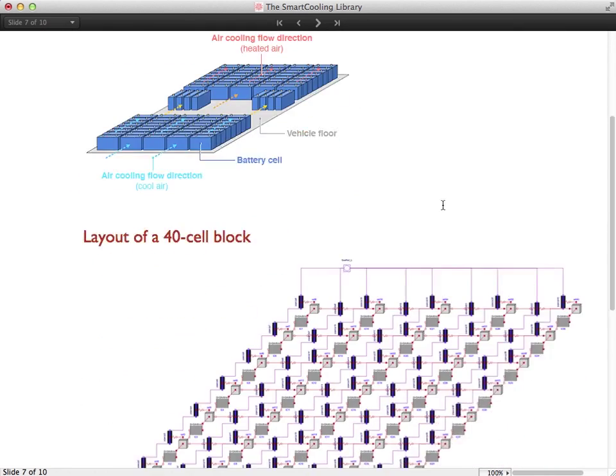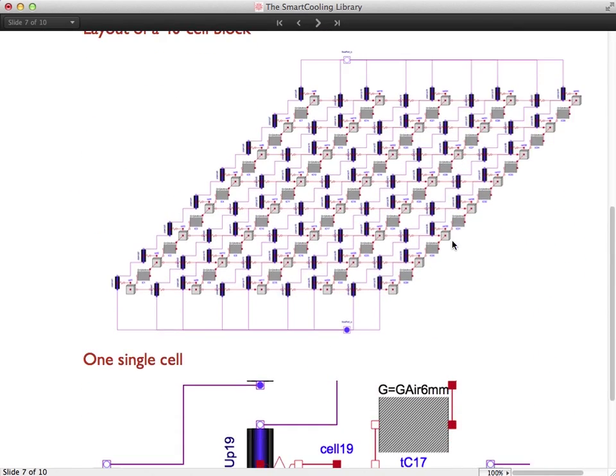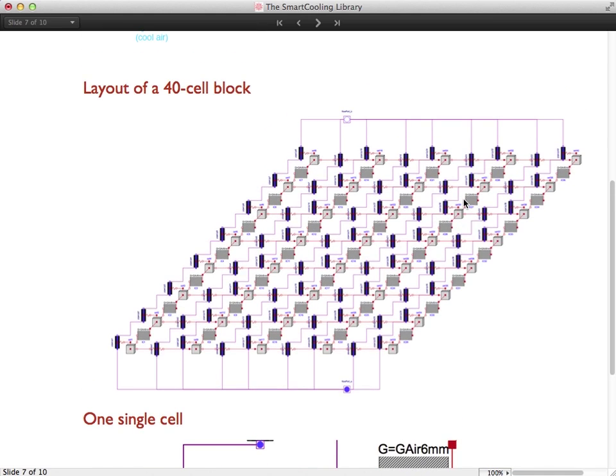Now we enter into one of these components with 40 cells in them. You can see the individual cells arranged in 5 lines with 8 cells in each. And on the side here, you can see the pipes. So the pipes that transport air above and between the cells.